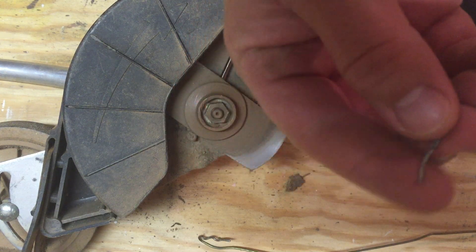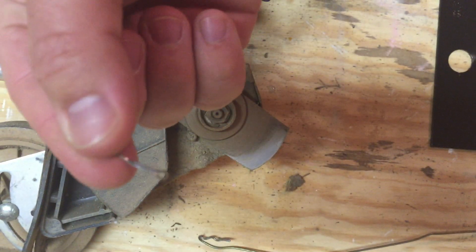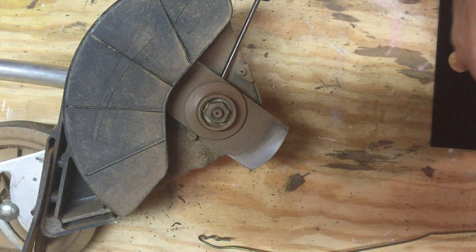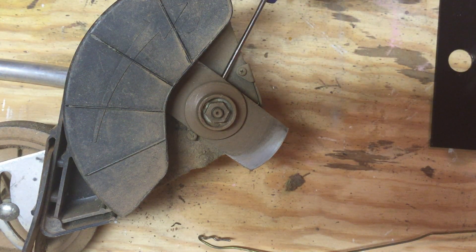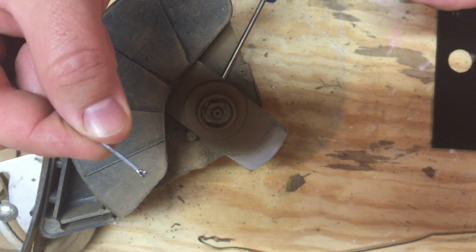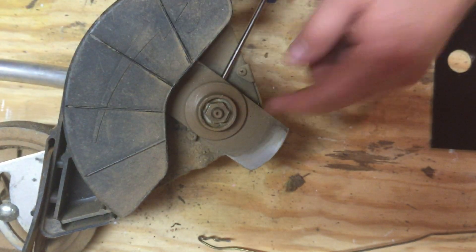I replace this every time I replace my edger blade just because they're cheap. I think this was 13 cents. So I have a new one here. It's just split in the middle so that you can bend it around the edges.